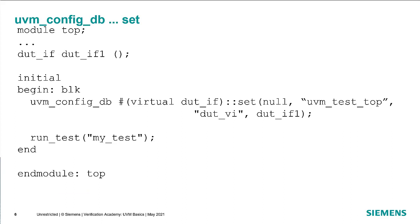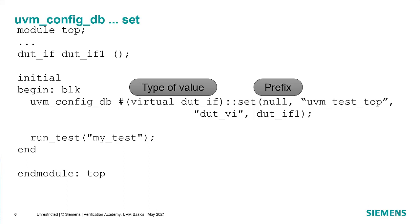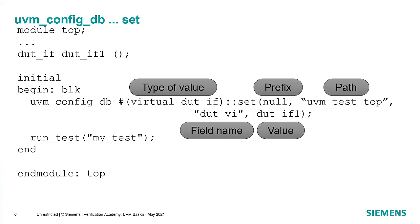In our top-level module, we instantiate the interface, and in the initial block, we issue a command called uvm_config_db::set. Set is a static method of the UVM config database object. The config database is parameterized by the type of the value we're going to be configuring — in this case, a virtual interface of type .if. The arguments to the set call are a prefix and a path, which we put together to create a hierarchical path to the object that is going to be getting the value. In this case, it becomes uvm_test_top, which is always the name of the top-level test in UVM. Then we specify the name-value pair: the name is called DUT_vi, so when the test looks for something called DUT_vi, it will get the value — in this case, a pointer to .if1 in our top-level module. After that, we call run_test, which will create an instance of the my_test class, and inside of my_test it will go and get this value from the configuration database and then execute the test.